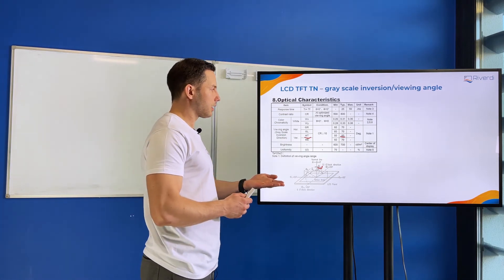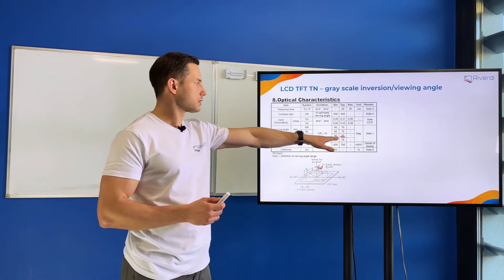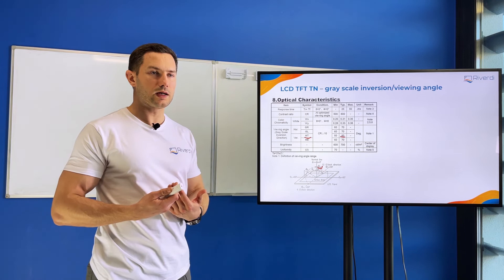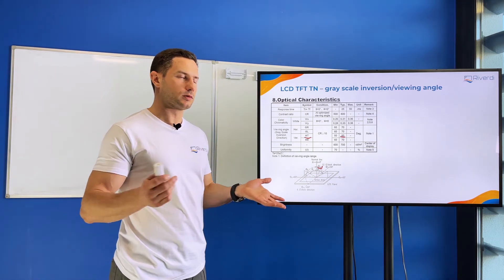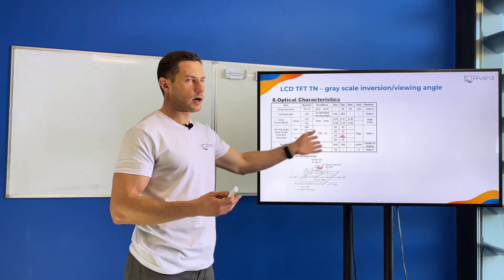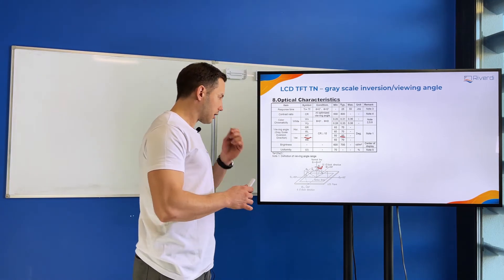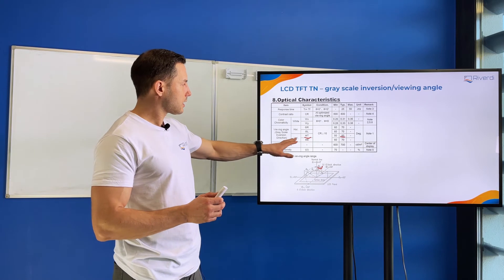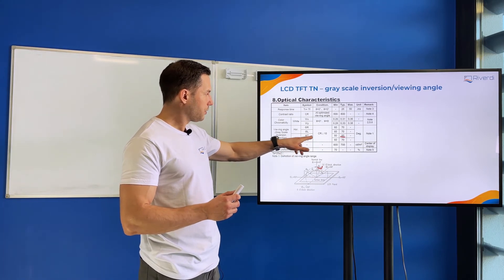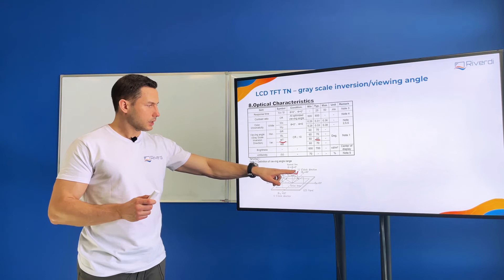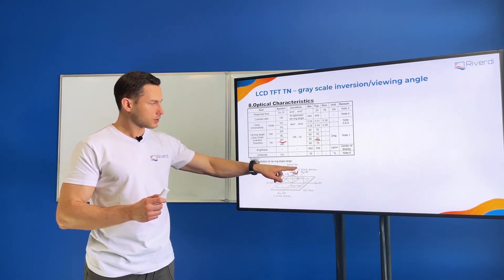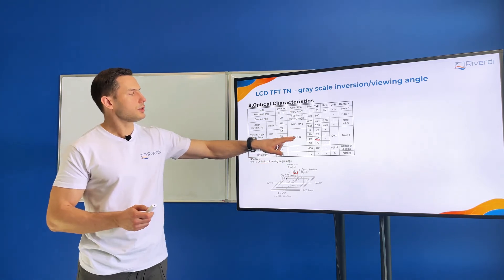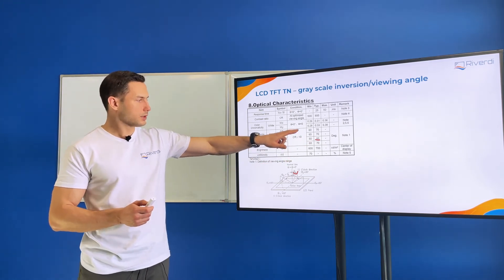We want the viewing angle as wide as possible, so we always choose the widest viewing angle. But you need to be careful. Here we see that the top theta viewing angle is at the 12 o'clock direction, and it's actually lower than the rest.